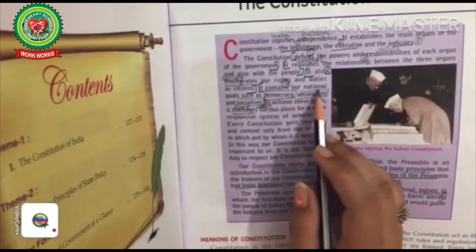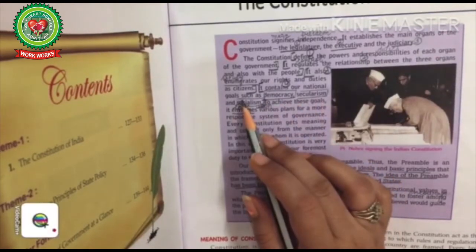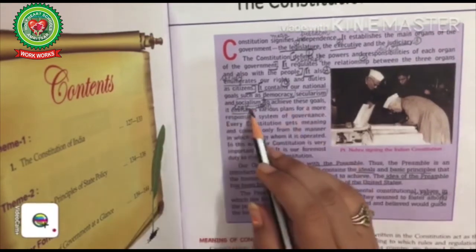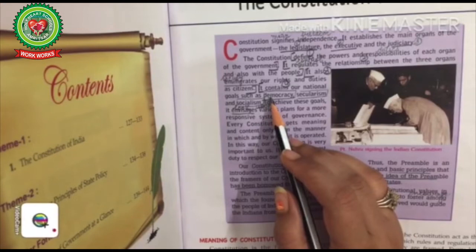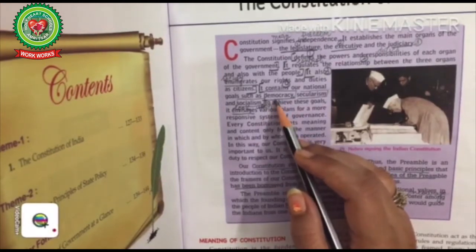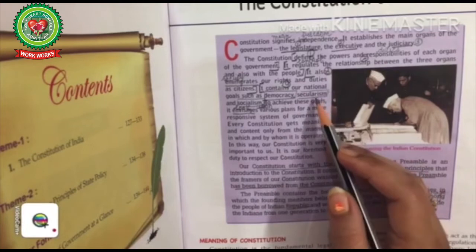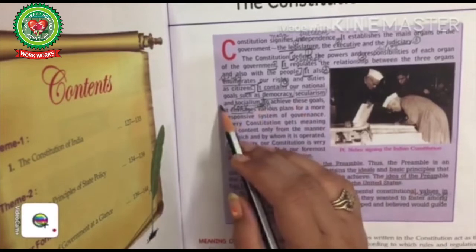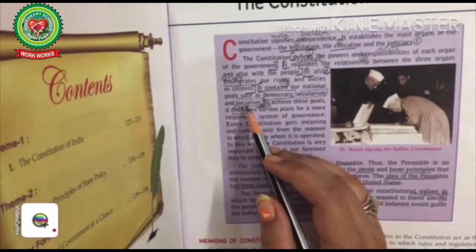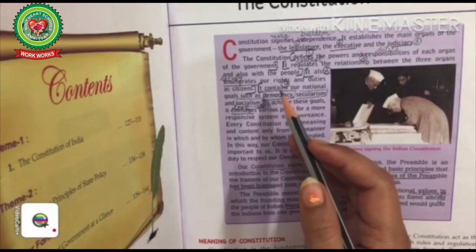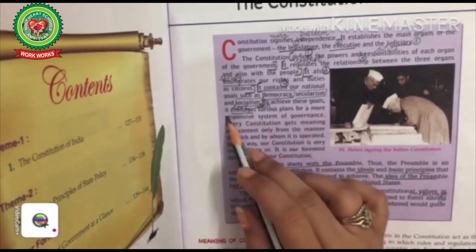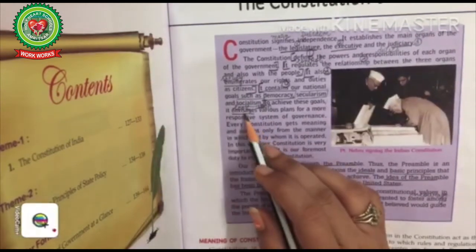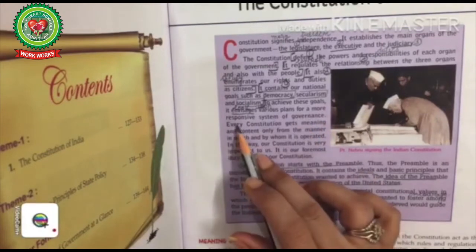Number four, the Constitution contains our national goals, such as being a democratic country, secularism, and socialism. Democracy means the government of the people, by the people, and for the people. Secular means no state religion, and socialism means equal distribution of resources among the people of India. To achieve these goals, the Constitution envisages — looks upon — various plans for a more responsive system of governance.